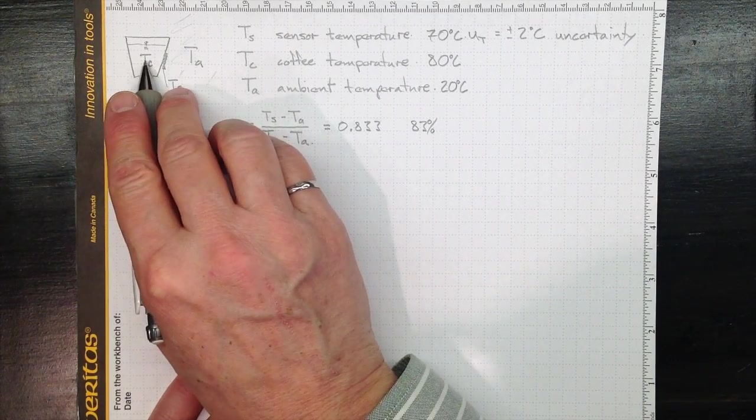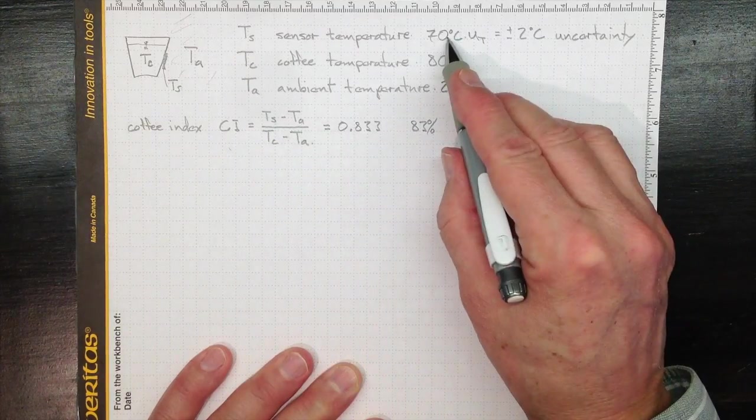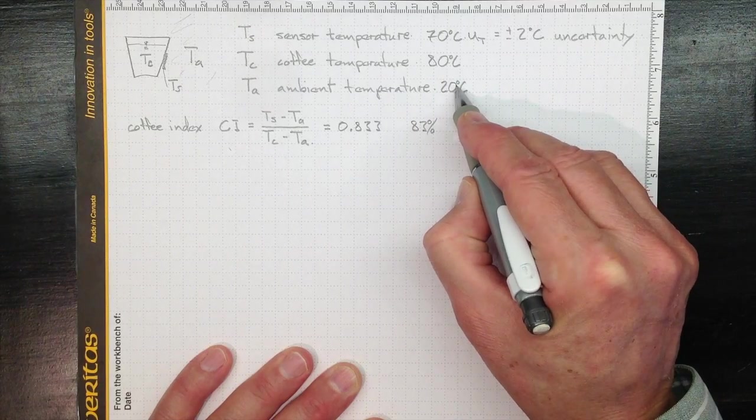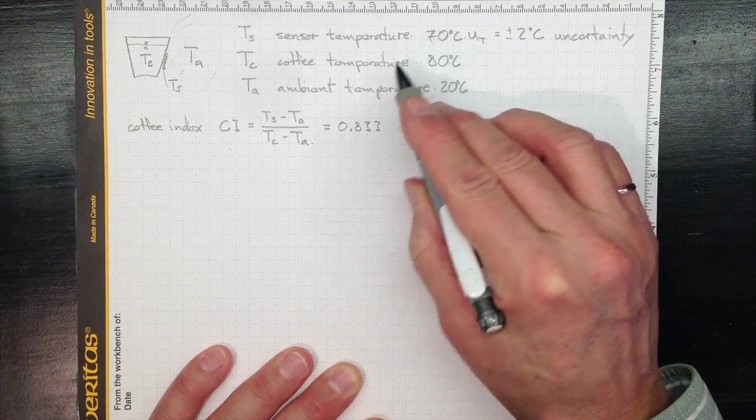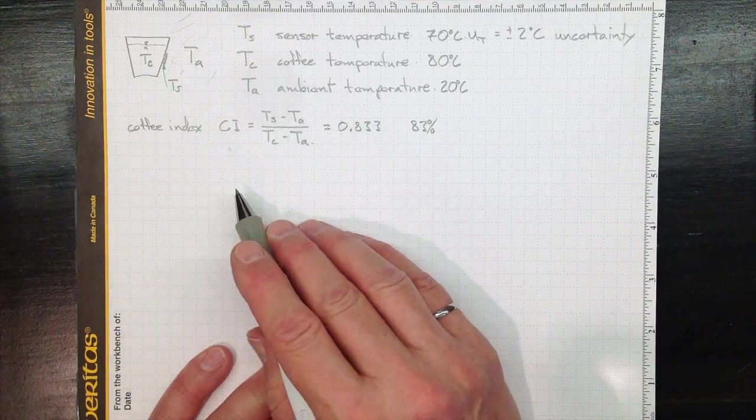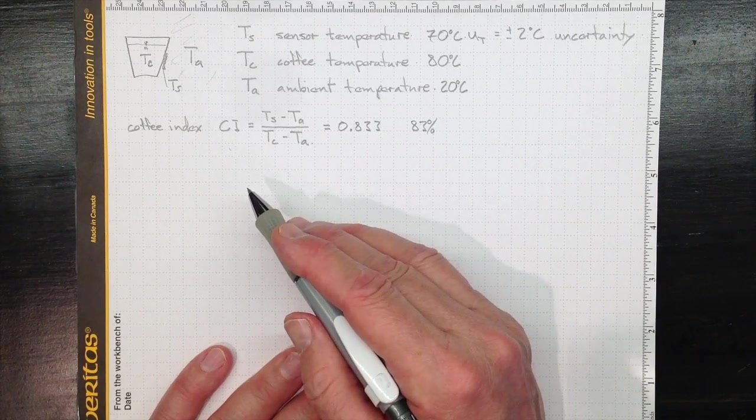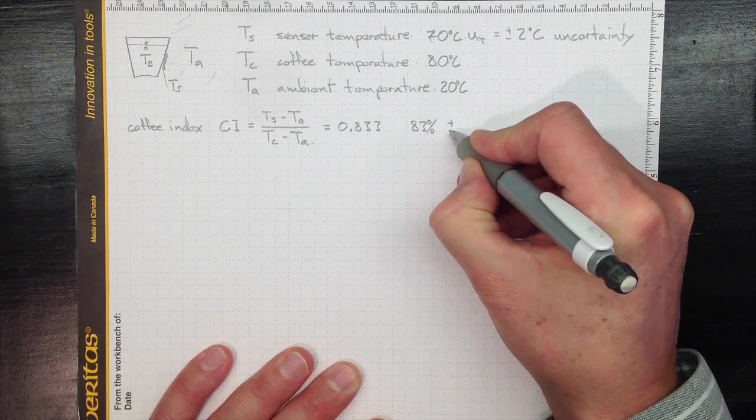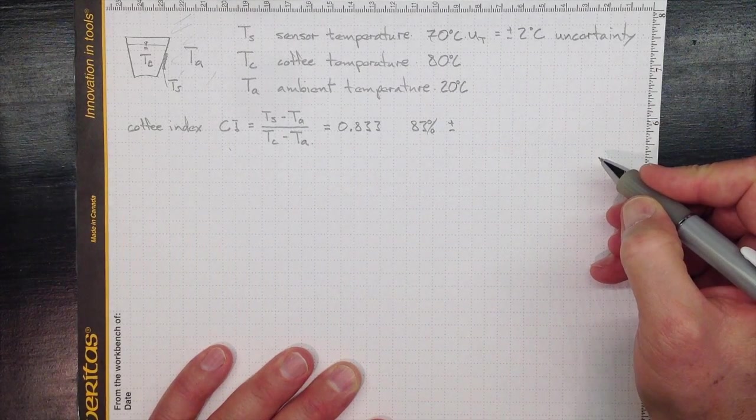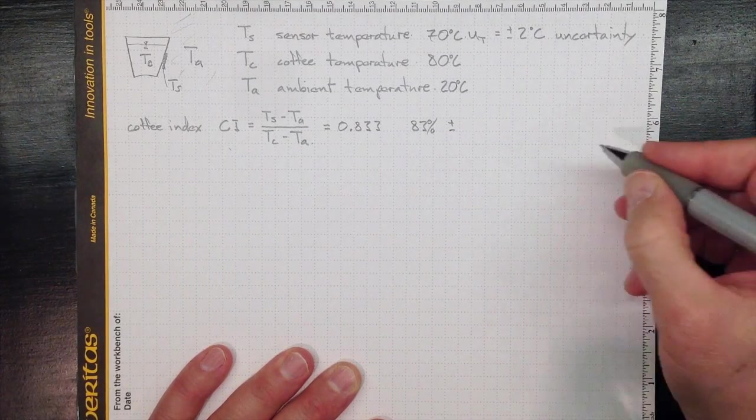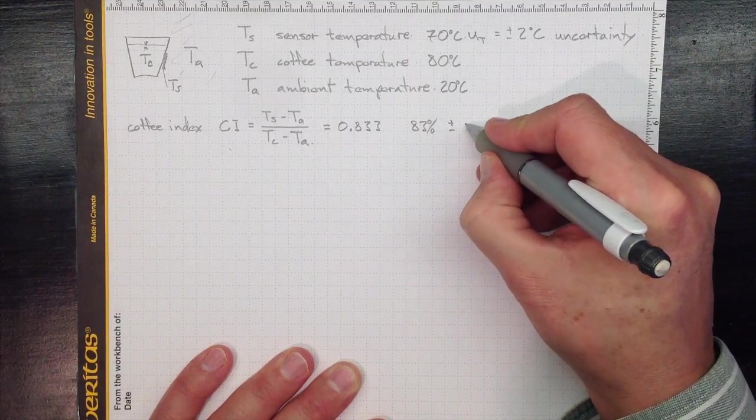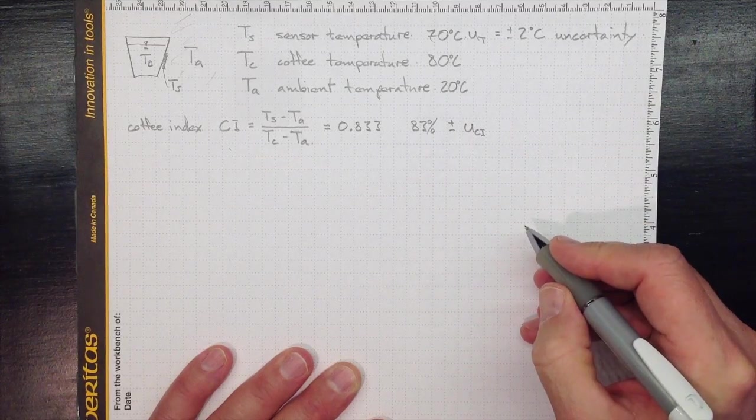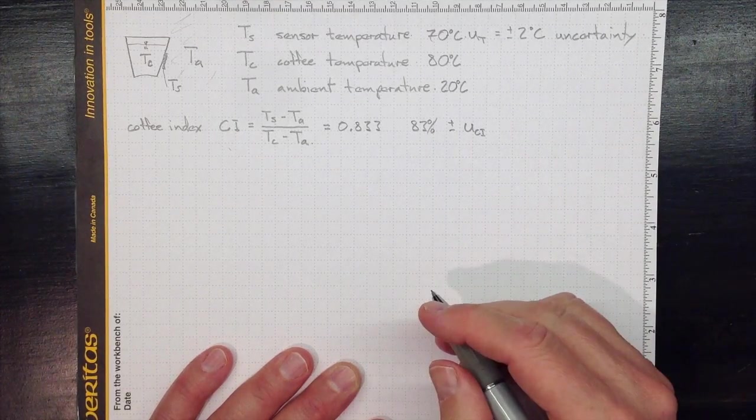that coffee index calculation gives us 0.833 or 83%. That means that the sensor temperature is 83% of the way from the ambient temperature to the coffee temperature. So 70 degrees Celsius, although it's not 80, is still much closer to 80 than it is to 20. So it gives us an indication of what the coffee temperature is likely to be. Now we'd like to know what's our uncertainty in this coffee index that we're using for a measurement.